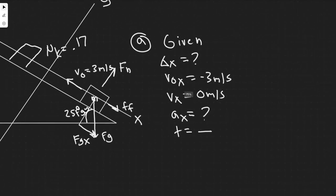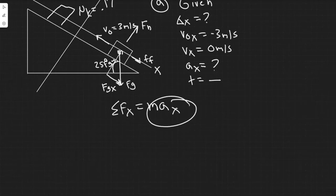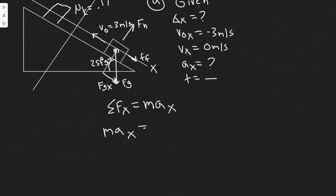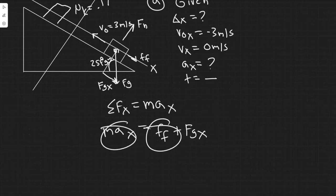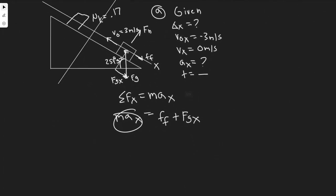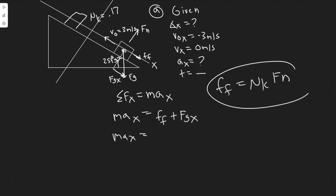Now we sum the forces in the x direction to find aₓ. ΣFₓ = m·aₓ. Calling rightward positive: friction acts to the right (opposing leftward motion up the incline), and fg_x also acts to the right. So m·aₓ = f_friction + fg_x, which expands to m·aₓ = μ_k·f_N + fg_x.